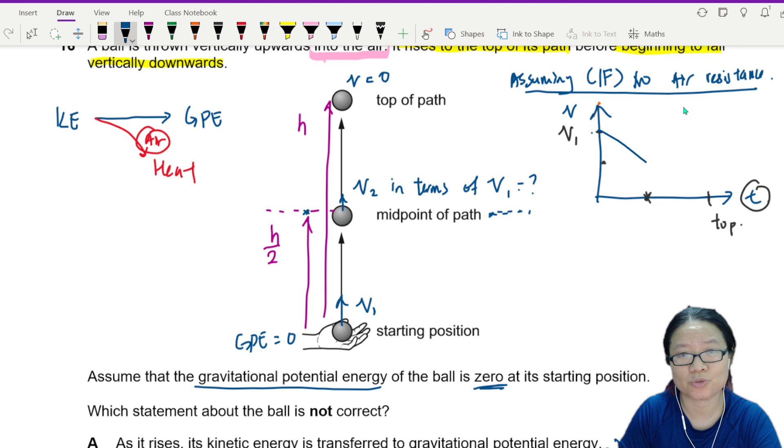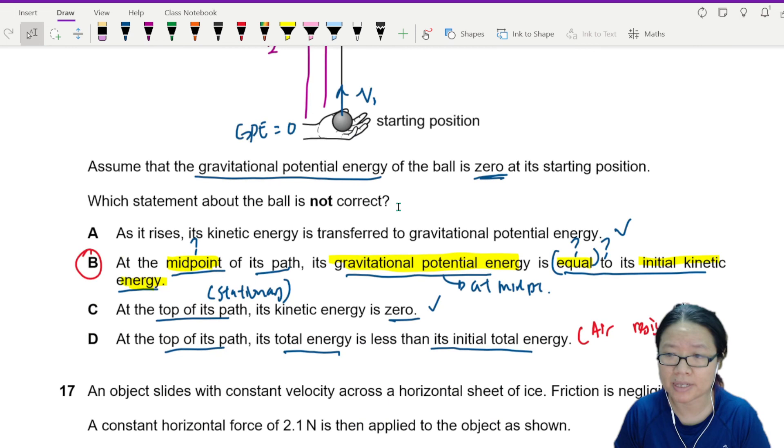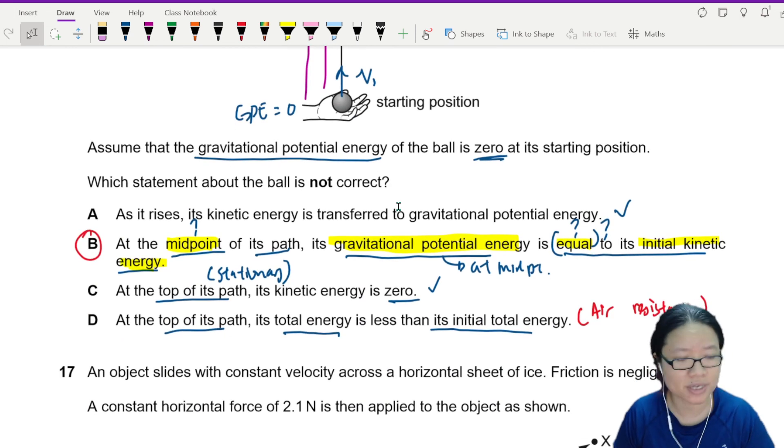You will need to find V2 in terms of V1 and then from there sub into the kinetic energy equation. So if we do that, that is another video, not for this one. Try out more statement questions. Learn to eliminate what is irrelevant. Read the question carefully.